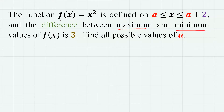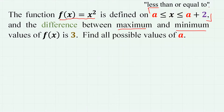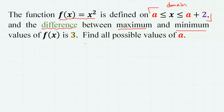The function f(x) = x² is defined on the domain x ≥ a and x < a + 2. So the domain of the quadratic function is limited here, and the difference between the maximum and minimum values of f(x) is 3. Find all possible values of a.